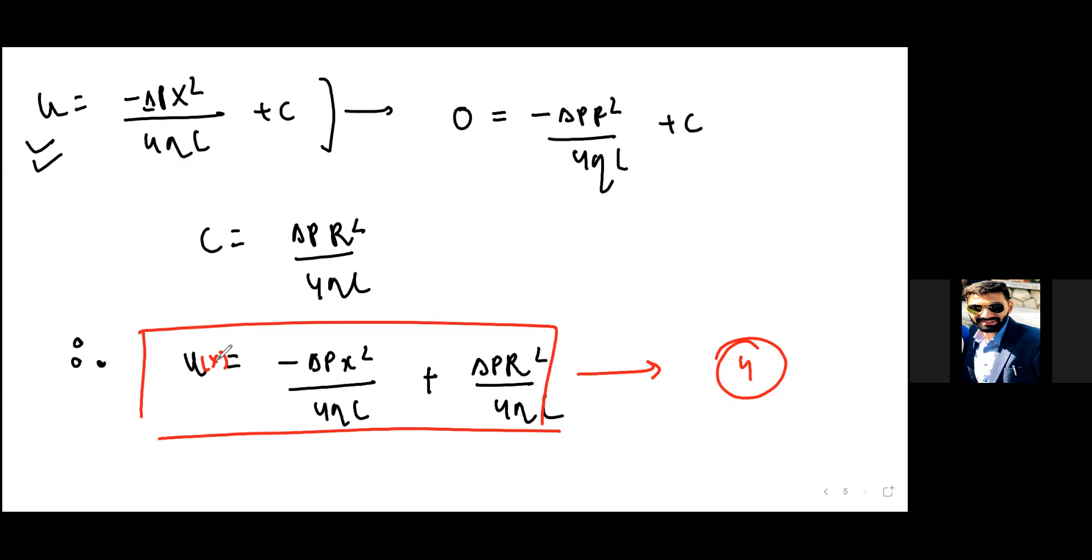We can get the flow rate at distance x for this particular element—how much flow is there at a thin hollow cylinder situated at x from the center. We calculate qx for that element, and then we integrate that qx over the entire distance. That gives you the total apparent flow rate for the entire pipeline. That we will do in the next session.